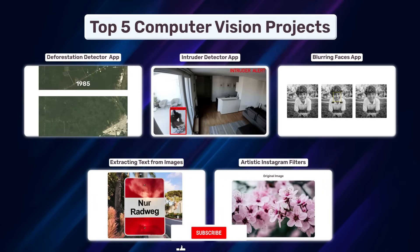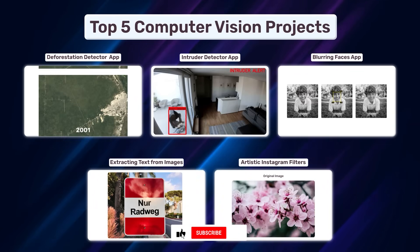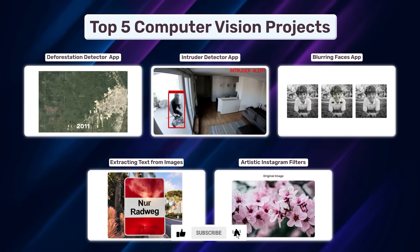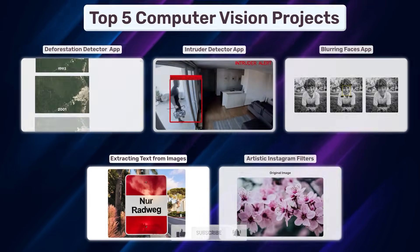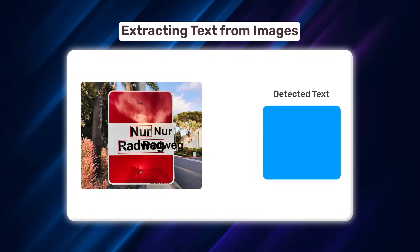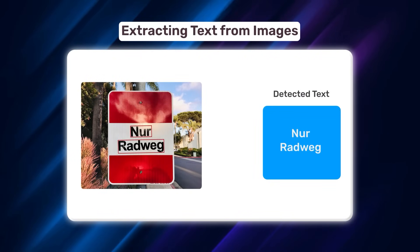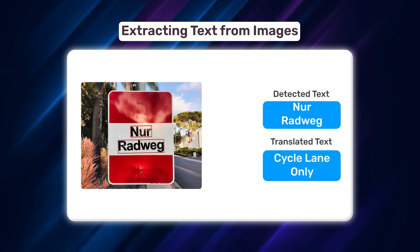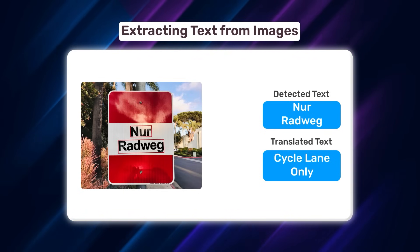Don't forget to like and subscribe for more such videos. Another cool project is extracting text from images. OpenCV can detect and extract text from images, and as a bonus, you can translate the extracted text using Google Translator's Python library.